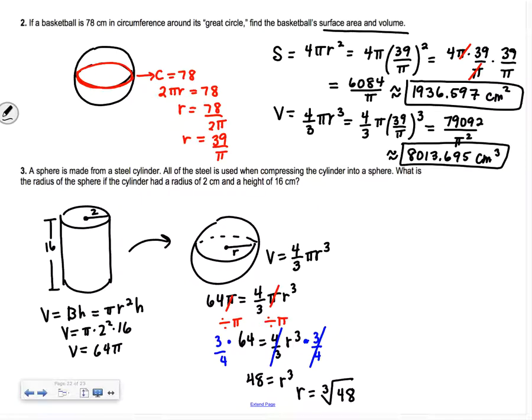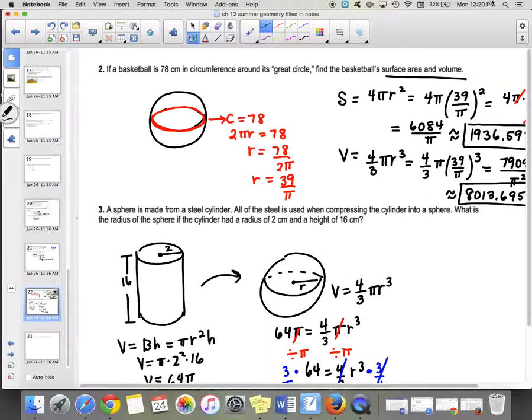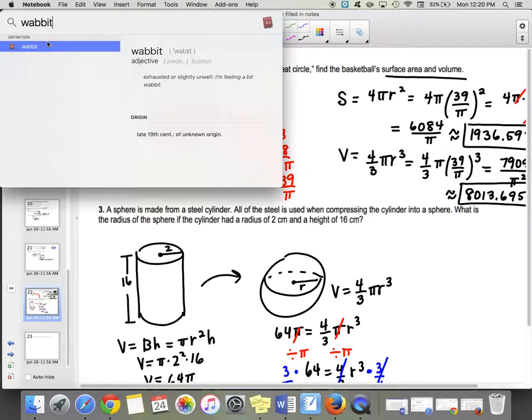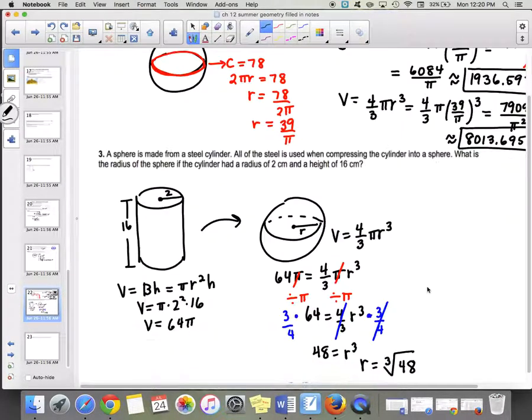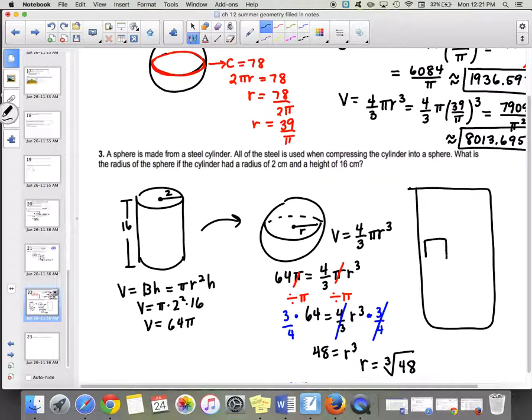You may not know how to put that into your calculator, so let me show you. On your calculator, you'll have something that says math. You can hit the math button, and mine is option number 4. It looks like this. We put in the cube root of 48.